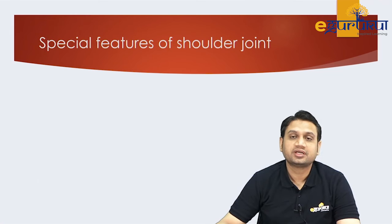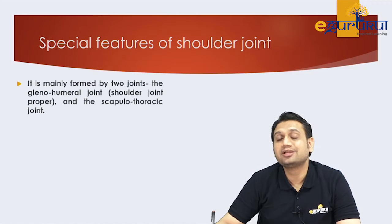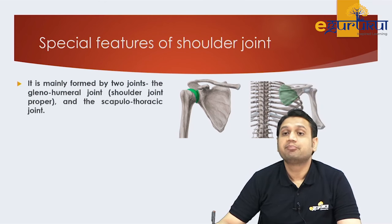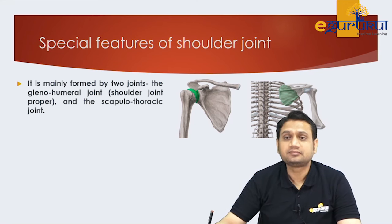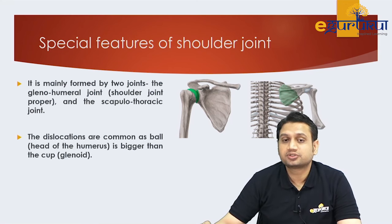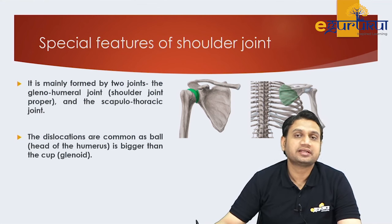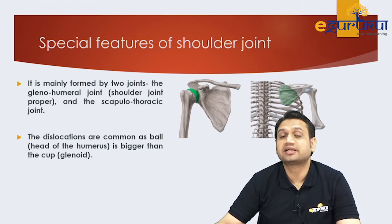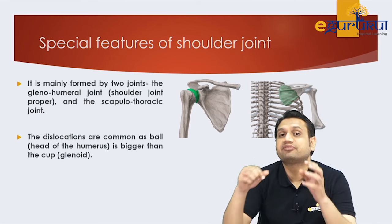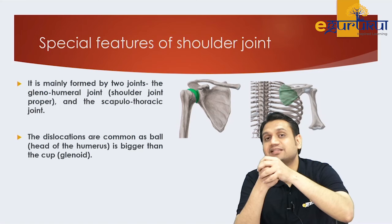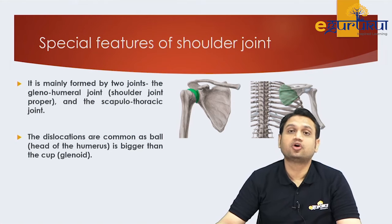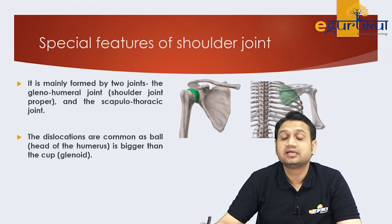A special feature of the shoulder joint is that it is made up of two joints: the primary glenohumeral joint between the glenoid and the humeral head, and the scapulothoracic joint between the medial margin of the scapula and the rib. Dislocations are very common in the shoulder because the head of the humerus is much bigger than the socket, unlike the femoral head and acetabulum, leading to a mismatch and frequent dislocation.